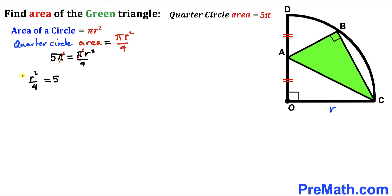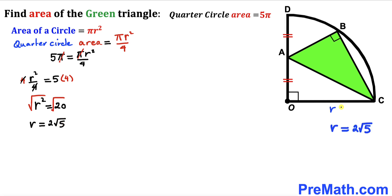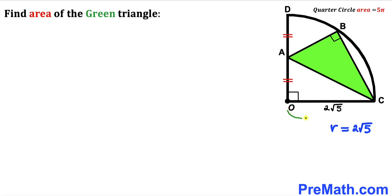Multiplying both sides by 4 removes the fraction, so r squared equals 20. Taking the square root on both sides, our radius r turns out to be 2 times the square root of 5 units.